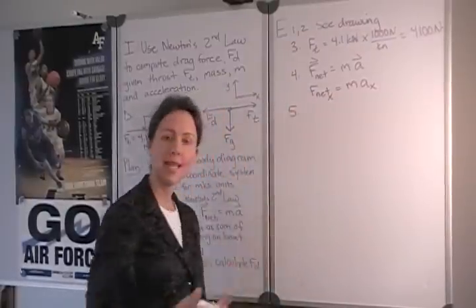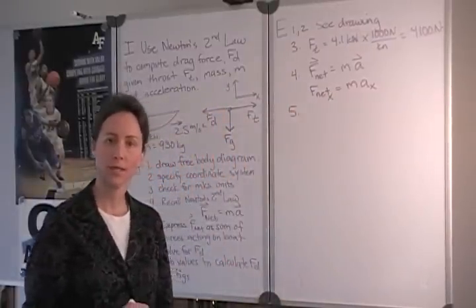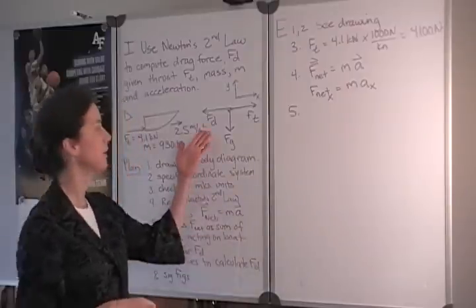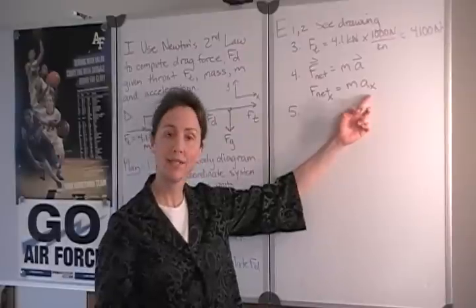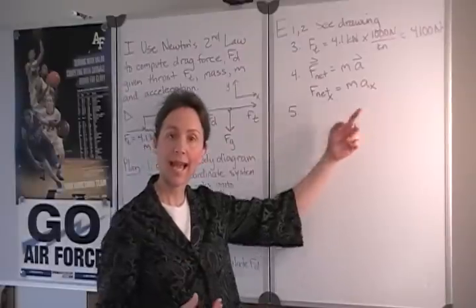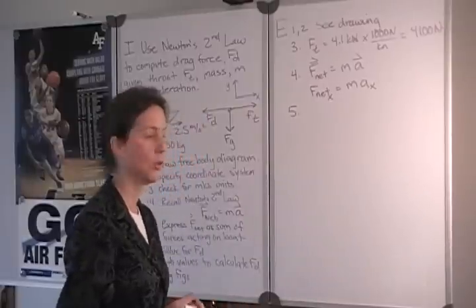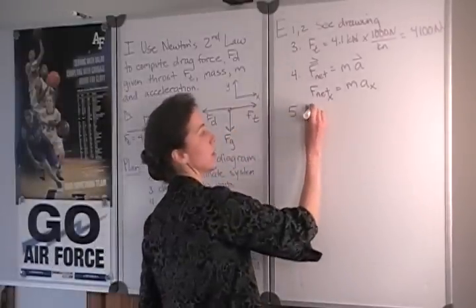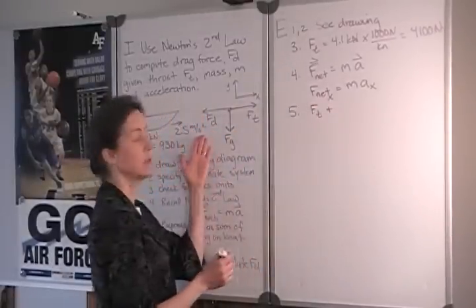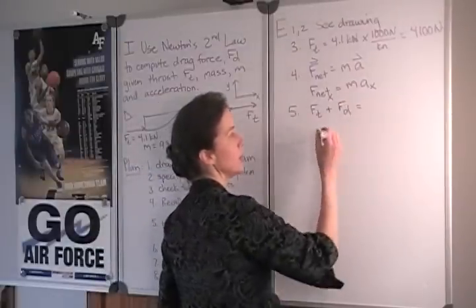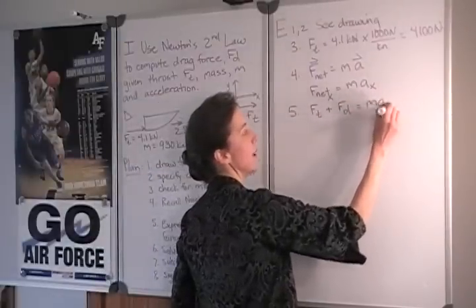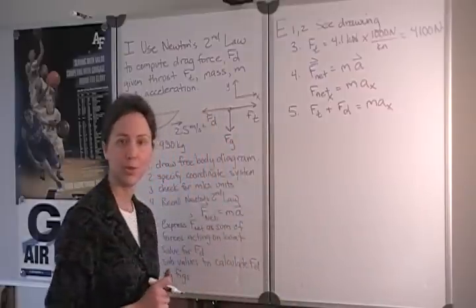Now we need to express that net force as the sum of the forces acting on the boat, which we've already identified in our free body diagram. The acceleration is in the x direction, so it is the forces acting in the x direction that we are concerned with. We see that that is the thrust force, f sub t, and the drag force. So these are going to add to make the mass times the acceleration in the x direction.